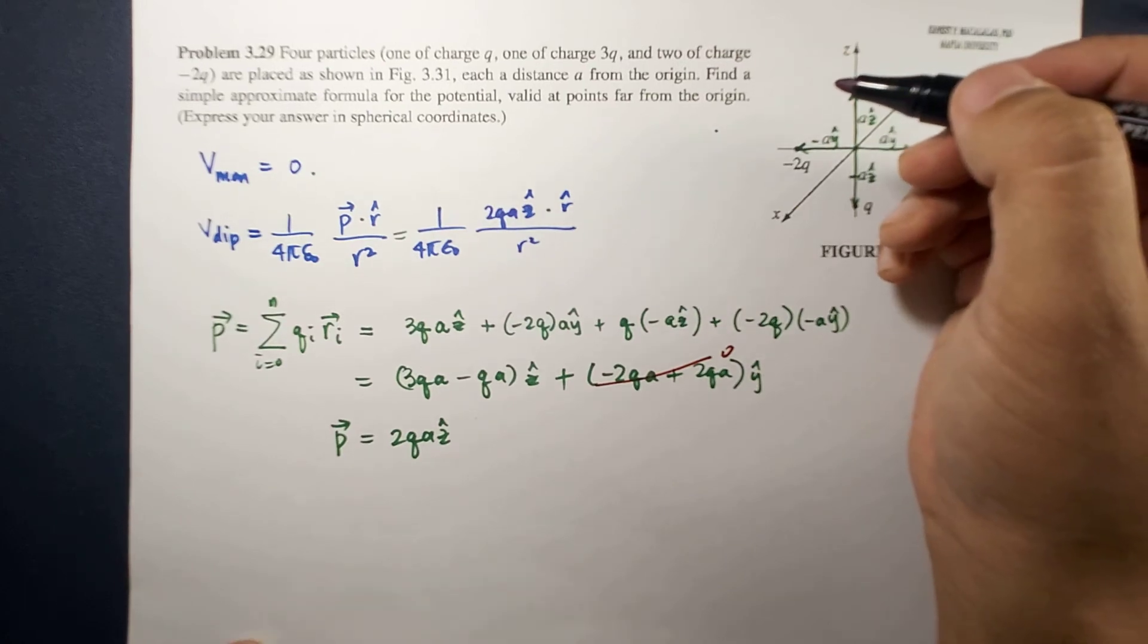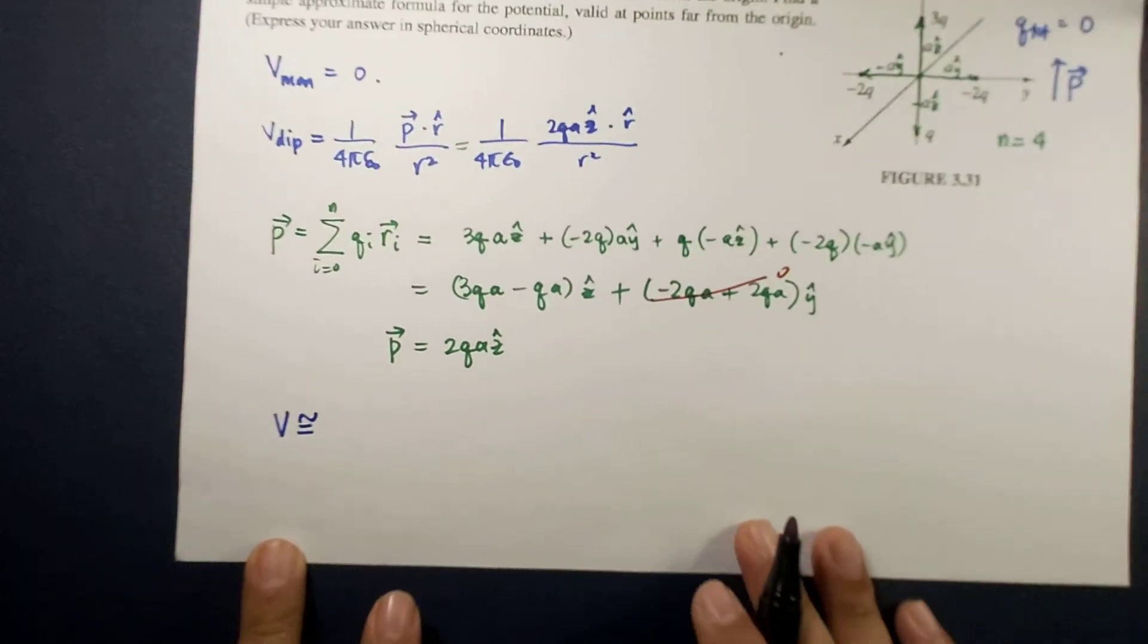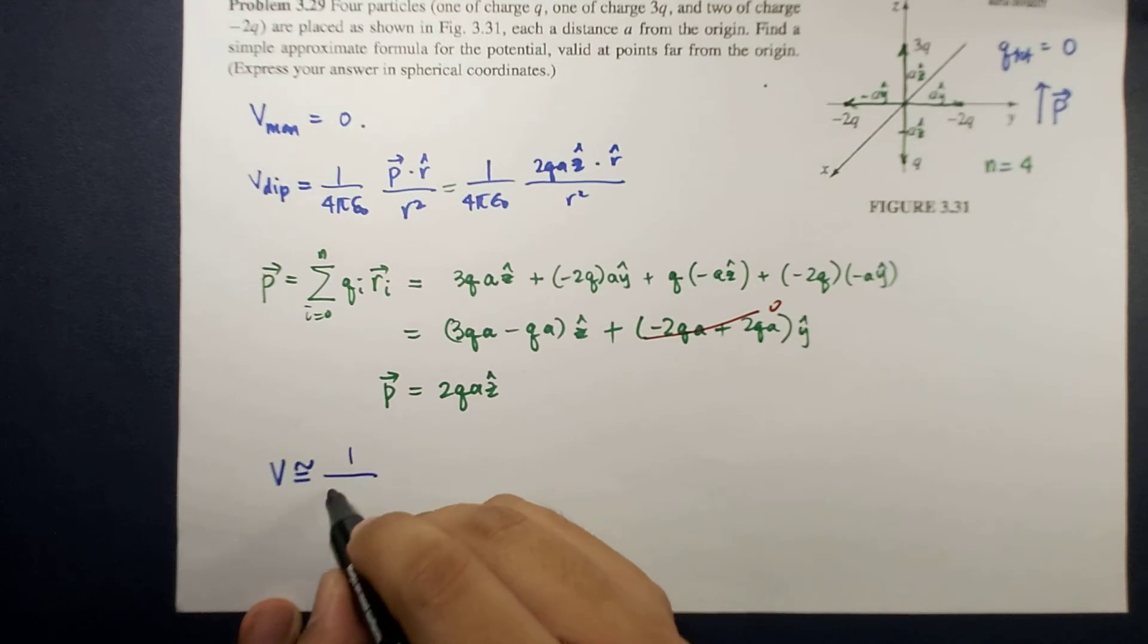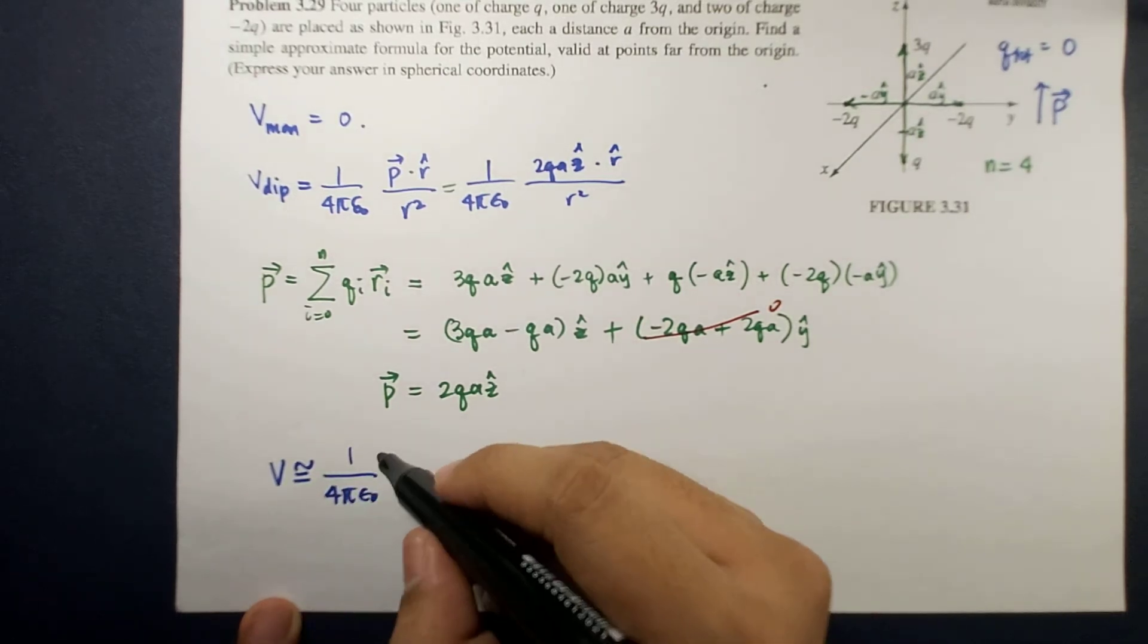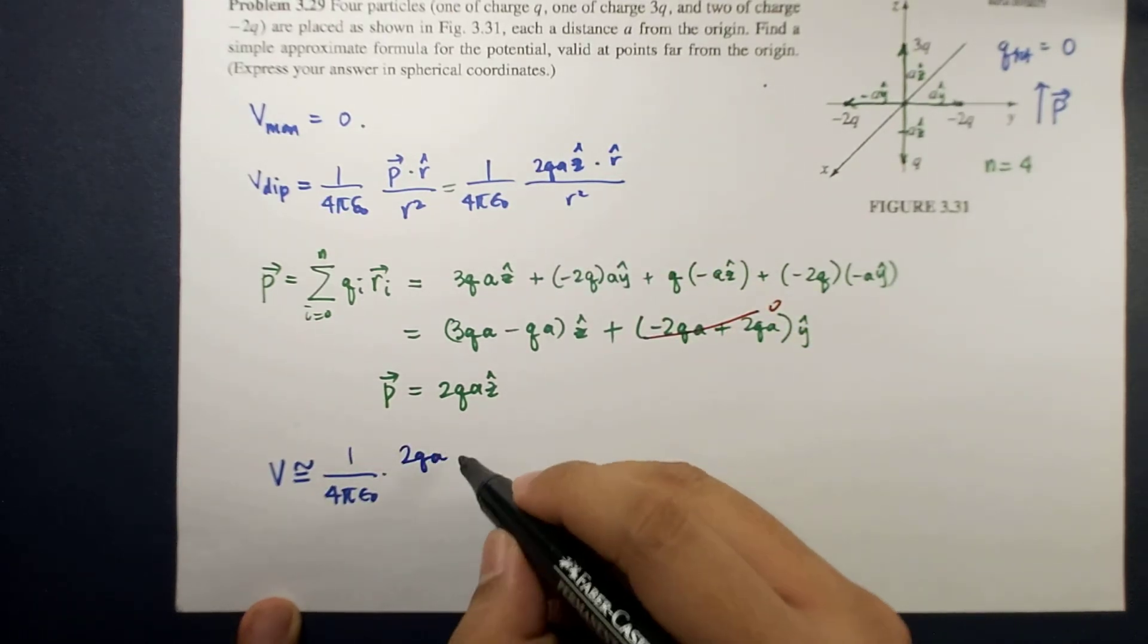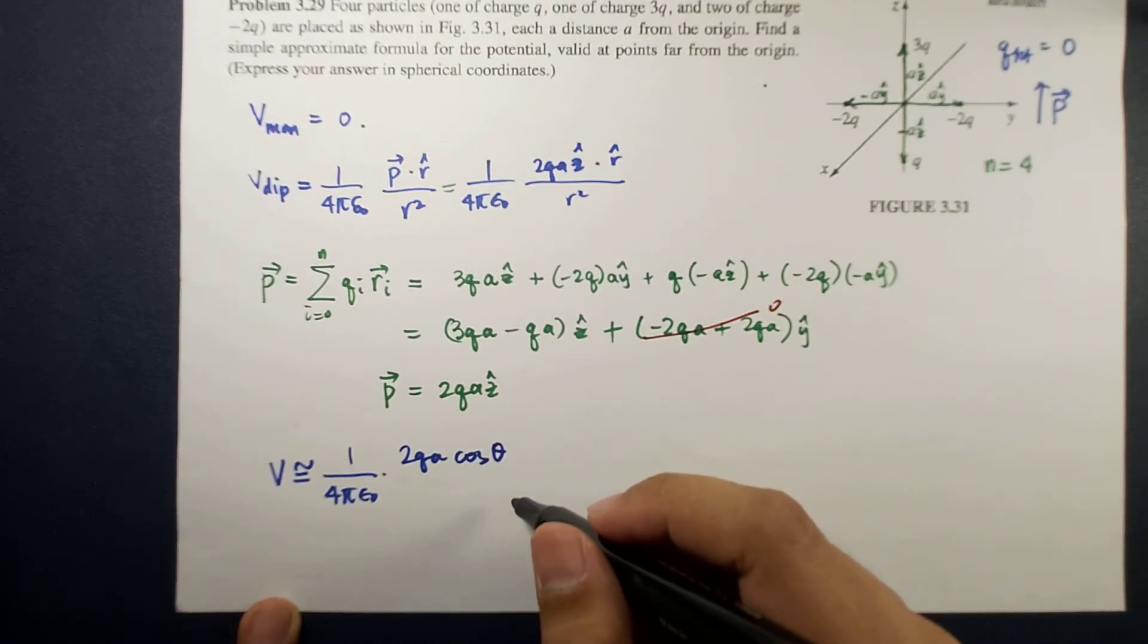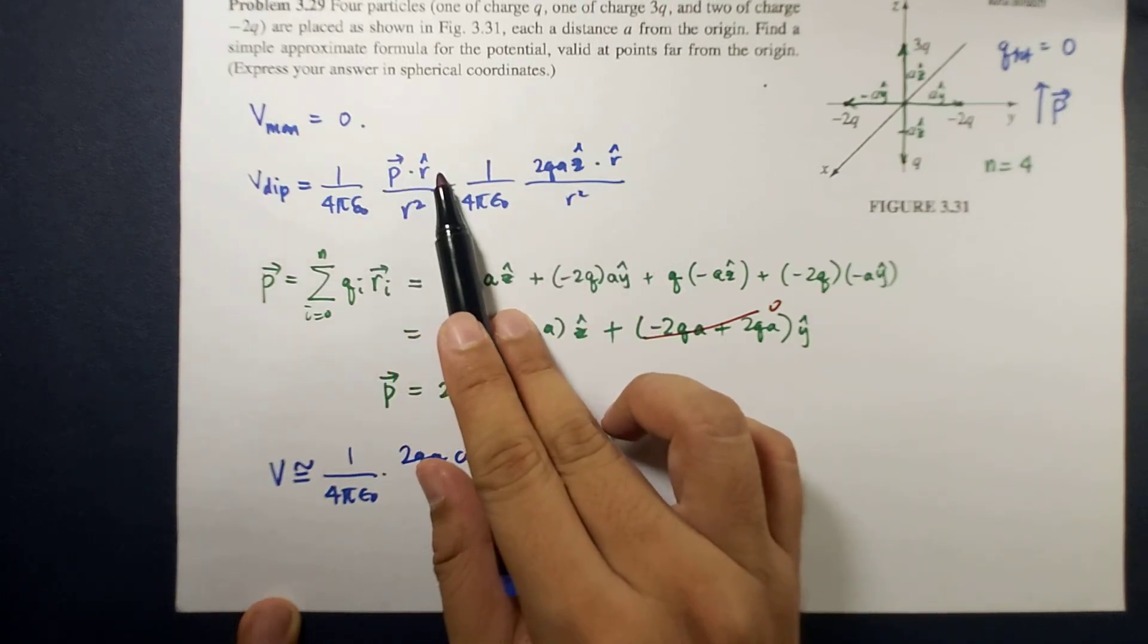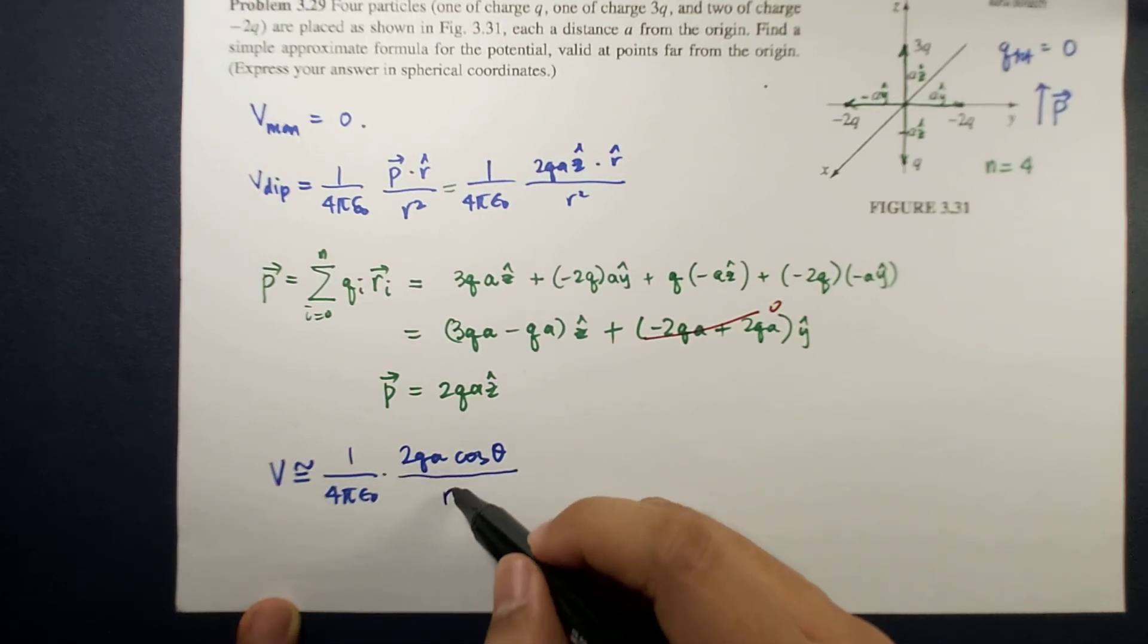The total potential is now approximately equal to 1 over 4π epsilon naught times 2qa times cosine theta, where theta is the angle between p and r hat, divided by r squared.